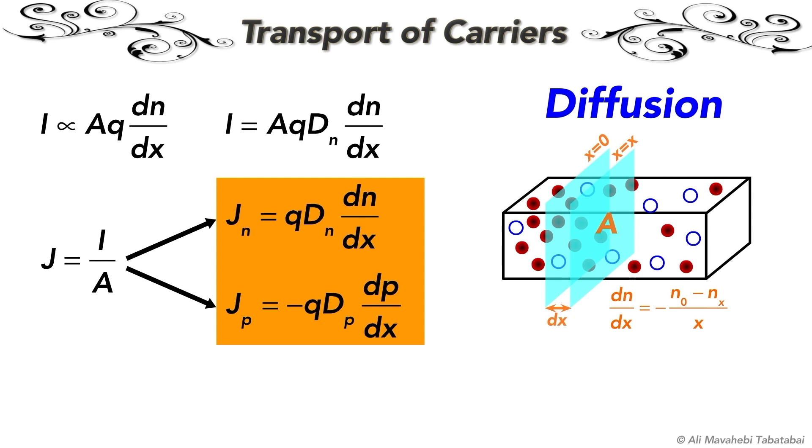There is an important relationship which relates diffusion constant to the mobility. This relation is known as Einstein's relationship for a semiconductor.